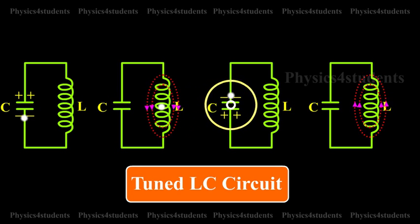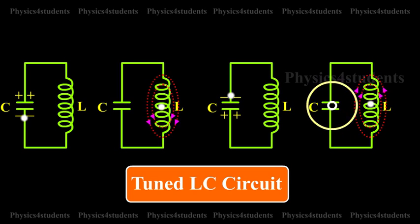Once the capacitor is completely charged, it begins to discharge in the reverse direction, producing again a magnetic field across L in the opposite direction. Again, the magnetic field will collapse and will charge the capacitor. The circuit returns to the original state.